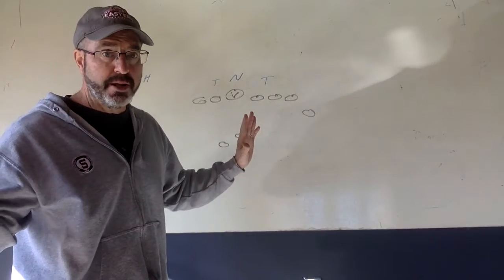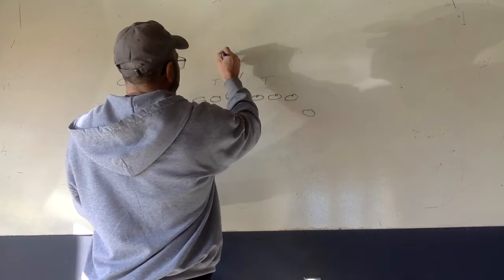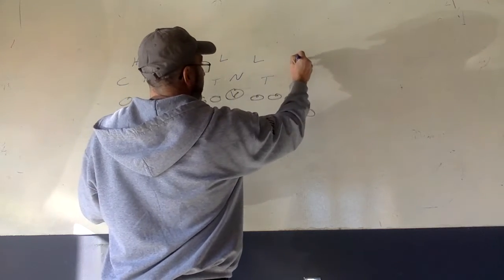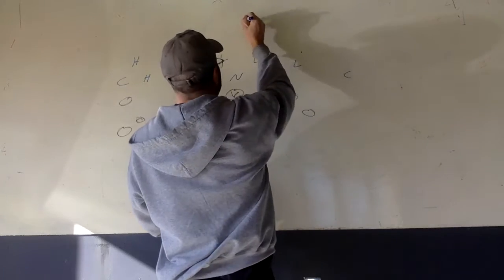Now, from here, they spread themselves out. We'll get a linebacker here, a linebacker here, a linebacker here, and a linebacker here. There will definitely be a corner here, and then a free safety there.